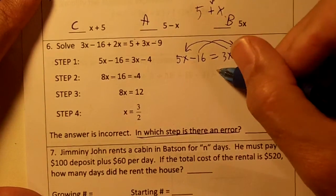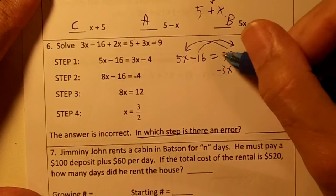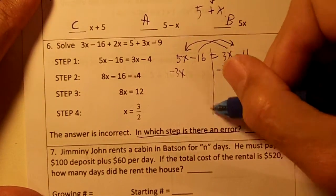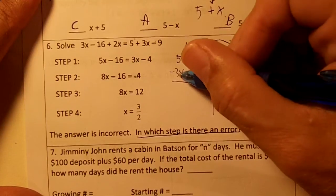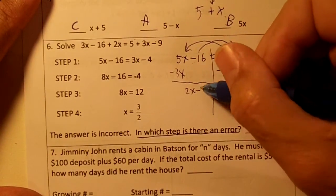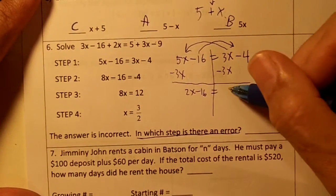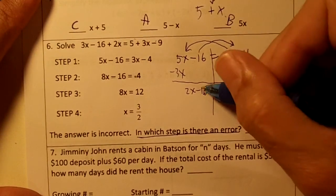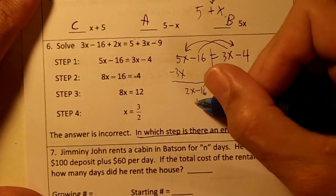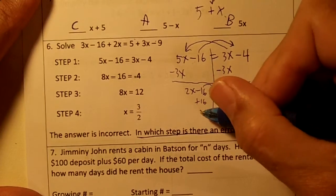So we're going to subtract 3x. The opposite of plus 3x is minus 3x. Let's draw a bar. 5x minus 3x is 2x minus 16 equals negative 4. Then we'll move the 16 across and we get 2x equals 12.